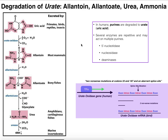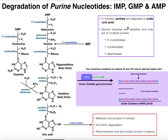Welcome back to Purine Degradation on Catalyst University. In the previous video, we talked about the degradation pathways for the three major purines — IMP, GMP, and AMP — and we saw that each of these pathways actually converges at the formation of xanthine, and then xanthine oxidase's second activity converts xanthine into uric acid.